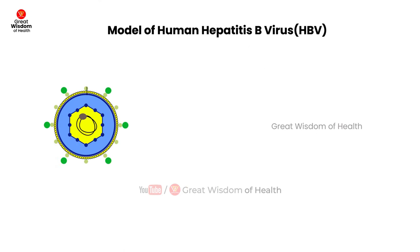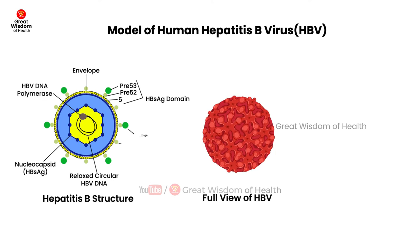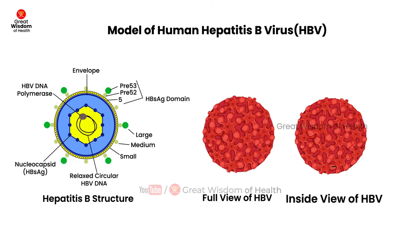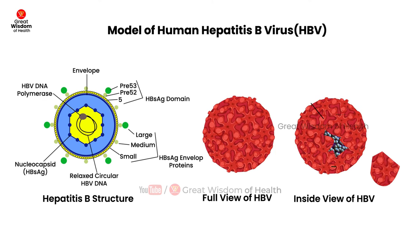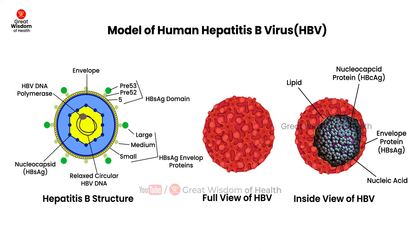What is HBV DNA? Hepatitis B virus DNA is a measure of the viral load of the hepatitis B virus in the blood. The DNA result is expressed in international units per milliliter, with each unit representing approximately six viral particles per milliliter of blood.